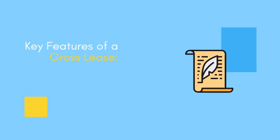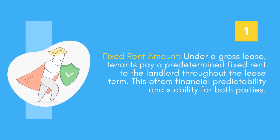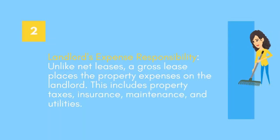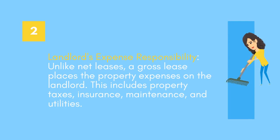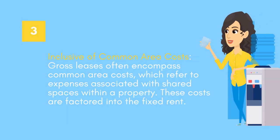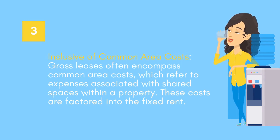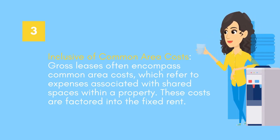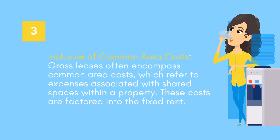Key Features of a Gross Lease. Fixed Rent Amount: under a gross lease, tenants pay a predetermined fixed rent to the landlord throughout the lease term. Landlord's Expense Responsibility: a gross lease places the property expenses on the landlord. Common Area Costs: gross leases often encompass common area costs, which refer to expenses associated with shared spaces within a property.